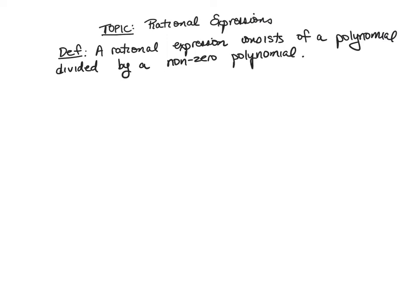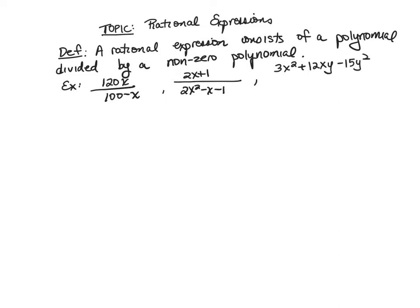For example, these are rational expressions: 120x over 100 minus x; 2x plus 1 divided by 2x squared minus x minus 1; and we could have more than one variable, like 3x squared plus 12xy minus 15y squared divided by 6x cubed minus 6xy squared.